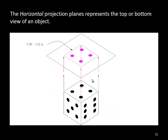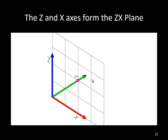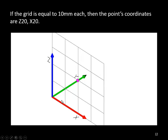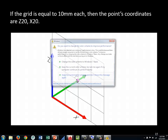Looking at the front view, the front view has the X and Z axes. XY is the flat plane, Z is coming straight up. So if I'm on the front of the box, I'm dealing with X and Z. If I have a grid of 10, I've got 20 over in the X direction and 20 up in the Z direction. Between those two views I fully describe this point — I know where it is in X, Y, and Z. The X value is the same in the front view as in the top view. That doesn't change.